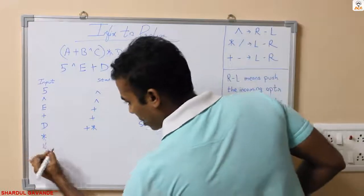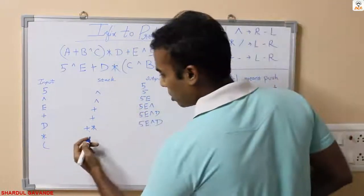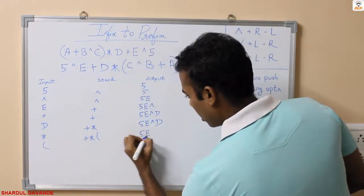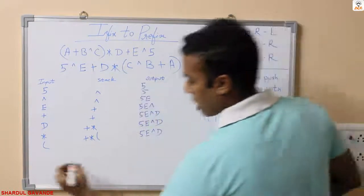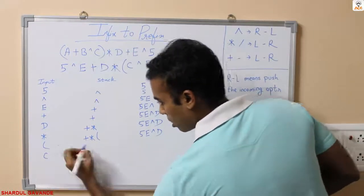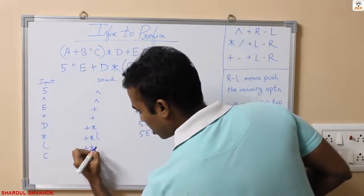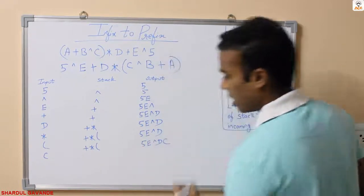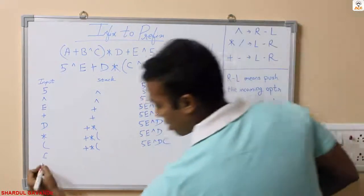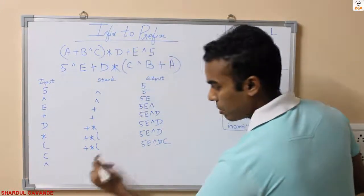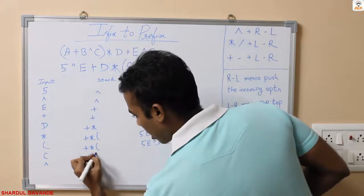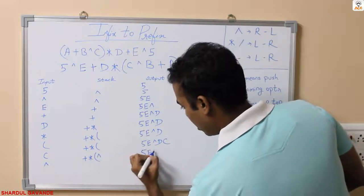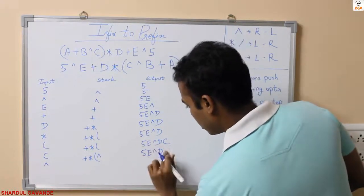Next I have open parenthesis. Whenever open parenthesis comes we will simply push it into the stack. So stack has plus, star, and open bracket. Output has 5, E, power, D. Next I have C — it is a character, no change in stack. Output: 5, E, power, D, and C. Next after C is power — it is an operator, simply push it into the stack. Output: 5, E, power, D, and C.